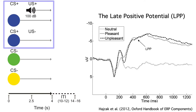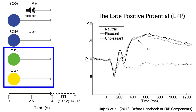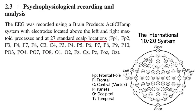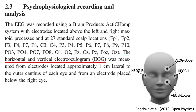As a reminder, subjects saw a CS plus color that predicted the occurrence of a loud noise burst, and they saw two different CS minus colors that predicted the absence of the noise. Felix predicted that the CS plus would elicit a large LPP, which reflects emotional arousal. Felix recorded from 27 scalp electrodes, and he also recorded from horizontal and vertical EOG electrodes.